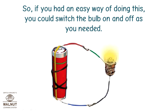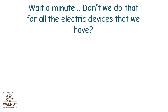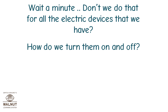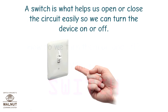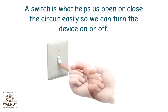So, if you had an easy way of doing this, you could switch the bulb on and off as you needed. Don't we do that for all the electric devices that we have? How do we turn them on and off? With a switch. A switch is what helps us open or close the circuit easily, so we can turn the device on or off.